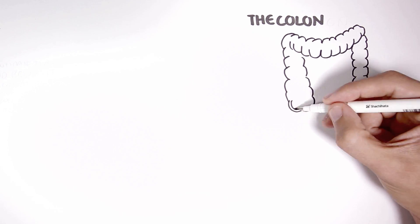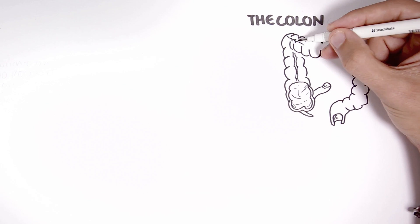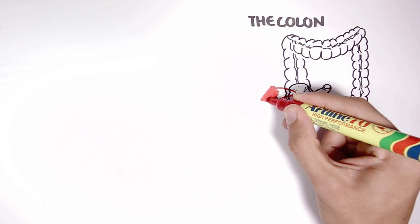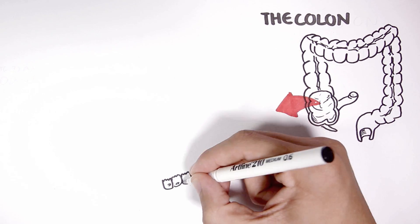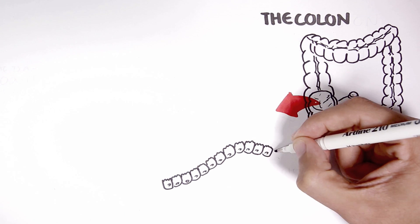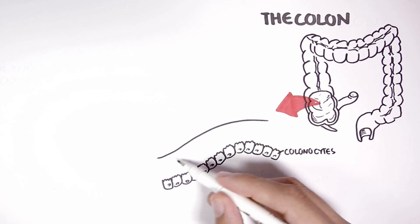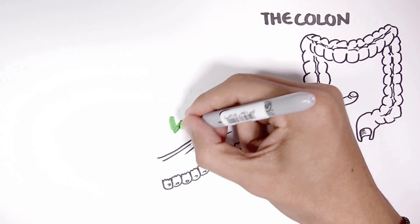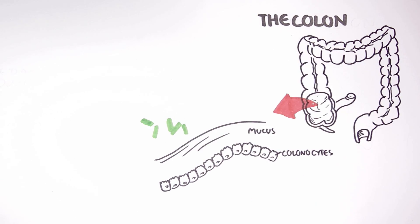The colon is colonized by trillions of bacteria. If we zoom into a section of the colon, we can find the colon cells, and on top of the cells towards the lumen is mucus. Bacteria reside on the mucus and within the lumen.